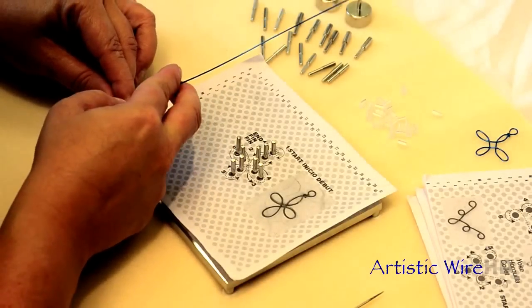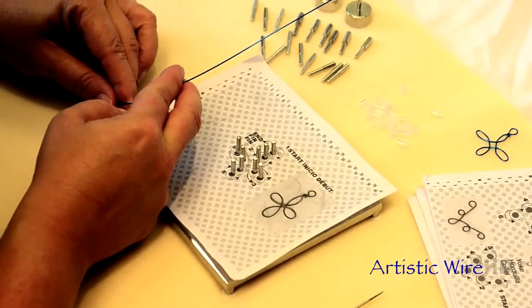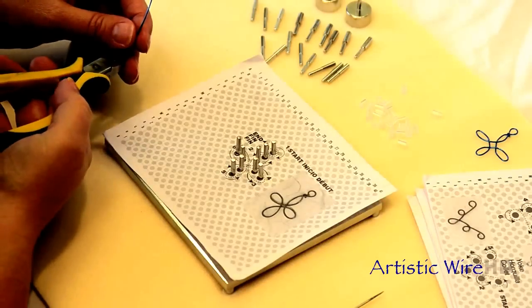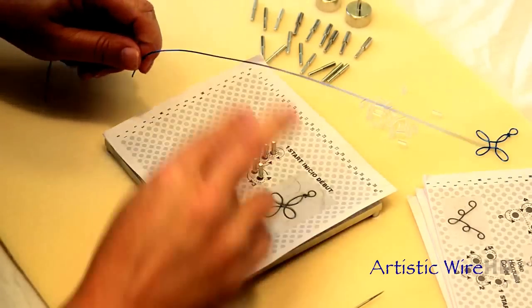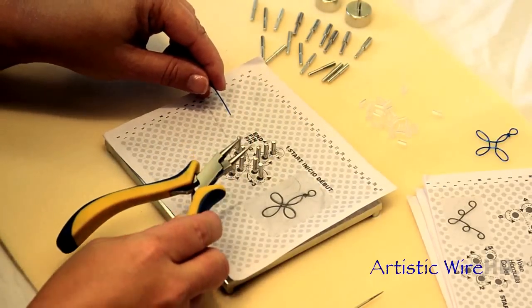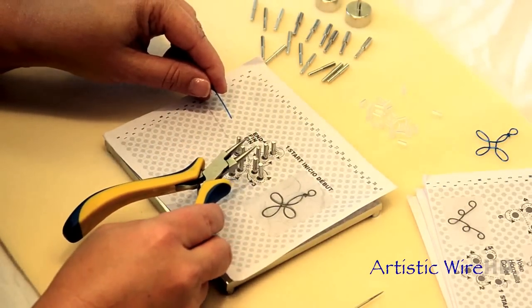The higher the number the thinner the wire, and the lower the number the thicker the wire. So we're just going to cut off a piece and then we're going to use our round nose pliers to make a loop.